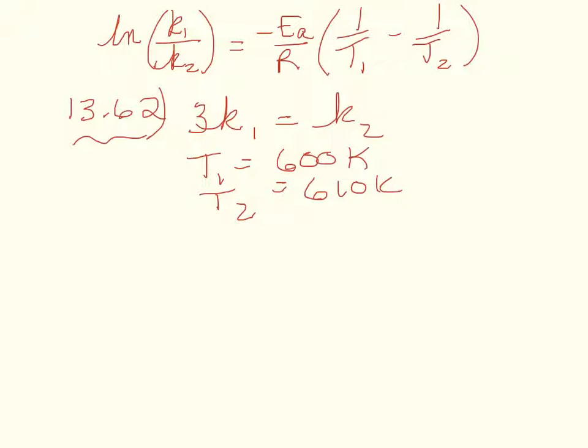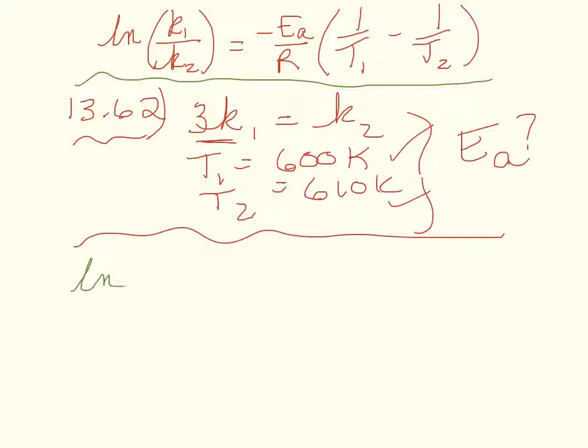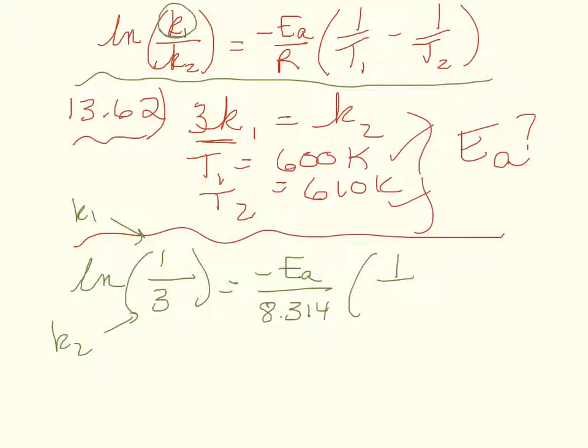So this problem is 13.62 at the end of the chapter in your textbook. And this problem asks for the activation energy for a reaction where the rate constant is tripled when the temperature goes from 600 Kelvin to 610 Kelvin. So plugging into the combined formula at the top of the page, we would want the natural log of 1 over 3, because we're saying that K1 is slower and that K2 is 3 times higher, equals minus the activation energy. The R value is 8.314. Notice that K1 is on top over here and T1 is the first one. So first and first, so you don't get the two mixed up. So T1 is 600 Kelvin and T2 is 610 Kelvin.